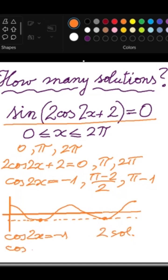If cosine of 2x is pi minus 2 over 2, which is a number between 0 and 1, we will draw a horizontal line, and that means we will get 1, 2, 3, 4 solutions.